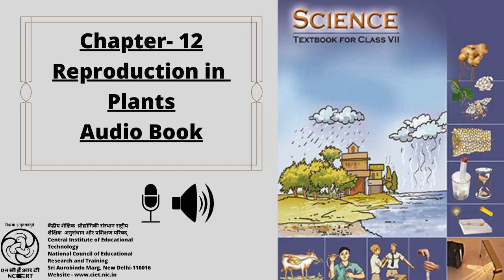Pollination: Generally, pollen grains have a tough protective coat which prevents them from drying up. Since pollen grains are light, they can be carried by wind or water. In self-pollination, the pollens transfer from the anther to the stigma of the same flower. In cross-pollination, the pollen from one flower transfers to the stigma of a different flower of the same kind.